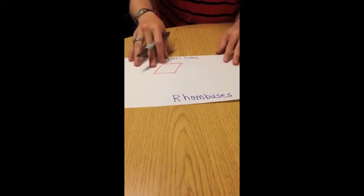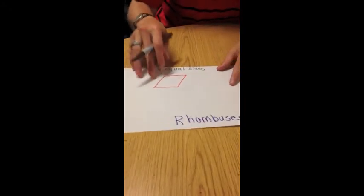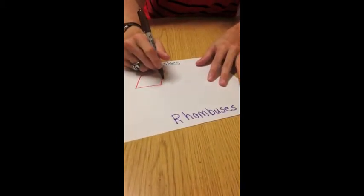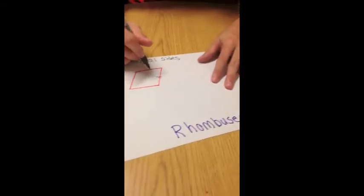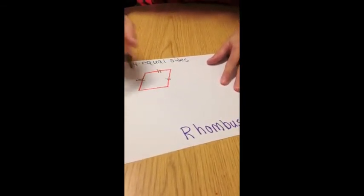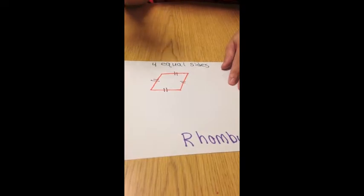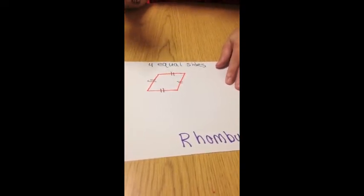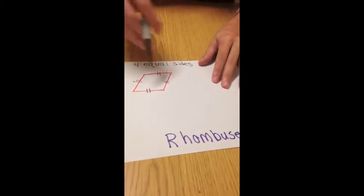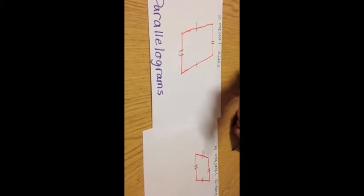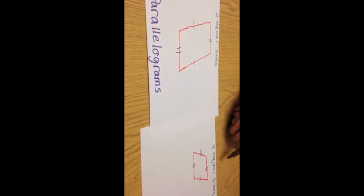The second to last quadrilateral that I am going to show you today is the rhombus. Now, the rhombus has four equal sides, like the square, but it is not classified as a square, but it is classified as a smaller parallelogram. As you can see that the parallelogram is longer, and the rhombus is shorter. So, therefore, it shares qualities of both the square and the parallelogram.